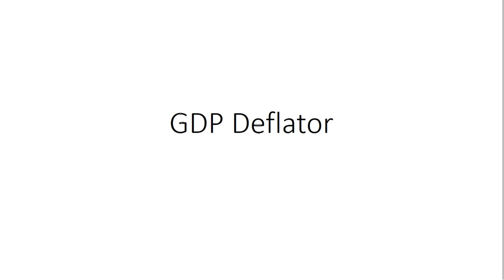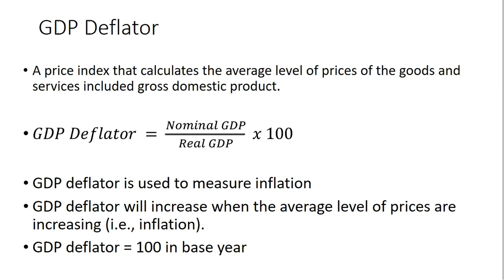In this video we're going to look at calculating the GDP deflator. The GDP deflator is a price index that is used to calculate the average level of prices of the goods and services included in GDP. The formula for calculating the GDP deflator is nominal GDP divided by real GDP, multiplied by 100. We multiply by 100 because we usually like to put index numbers in units of 100.